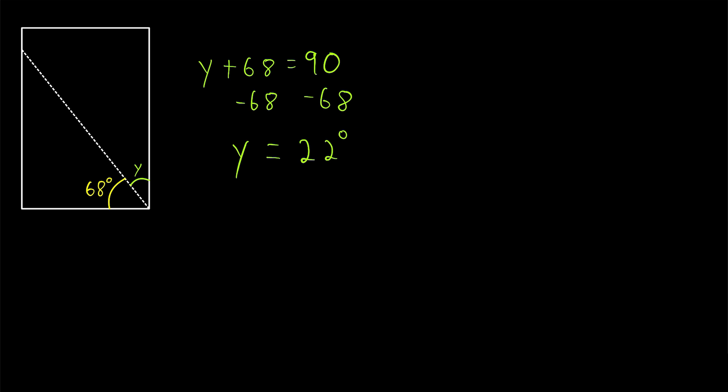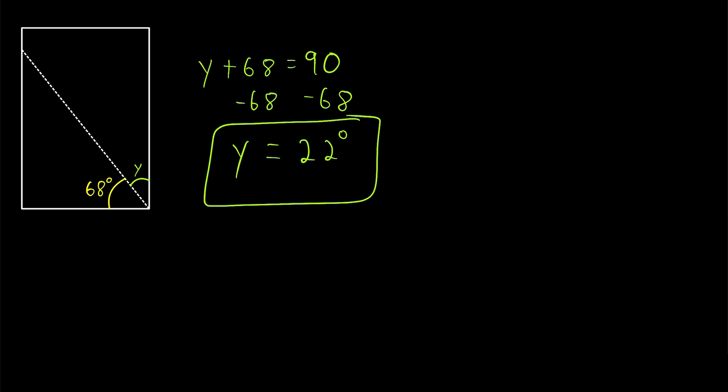Notice that I don't bother writing the degrees unit when working with the equation, just because it takes up too much space and looks kind of clunky. We know that we're working with degrees, so I just like to add it on to the final answer. Your teacher may not care if you use the degrees symbol at all, or maybe they'll demand that you use it through all of your work, but you just want to keep in mind that we're solving for the measure of an angle in degrees.